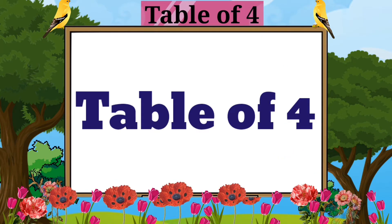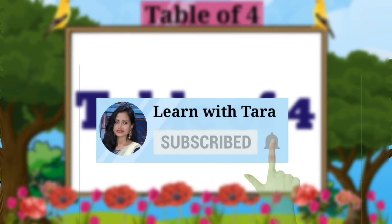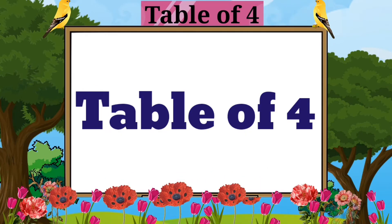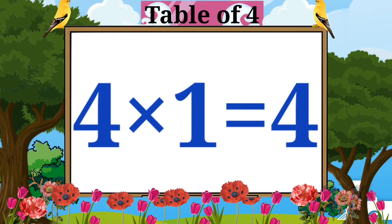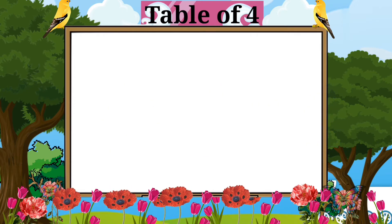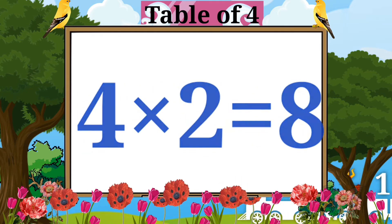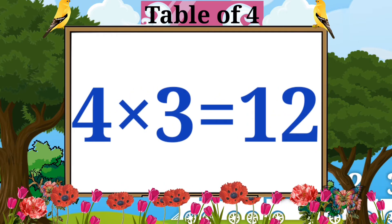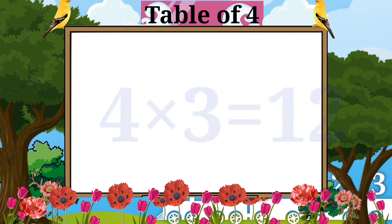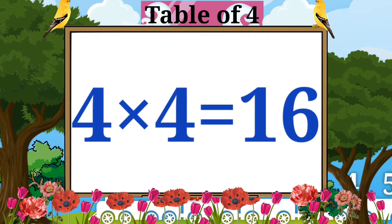Table of Four. Four ones are four. Four twos are eight. Four threes are twelve. Four fours are sixteen.